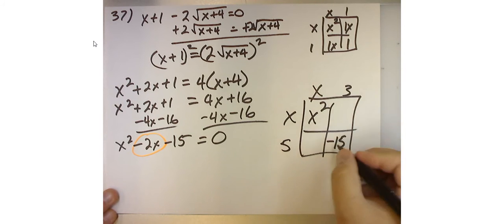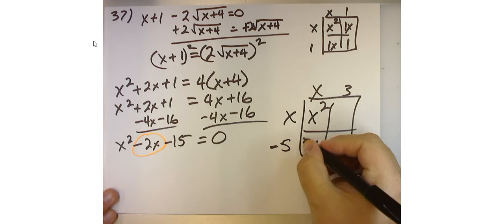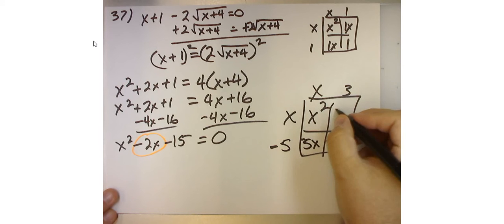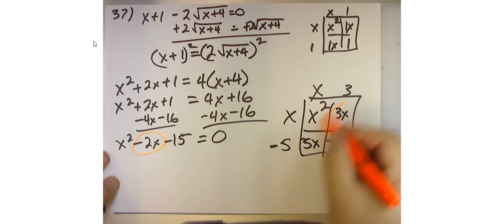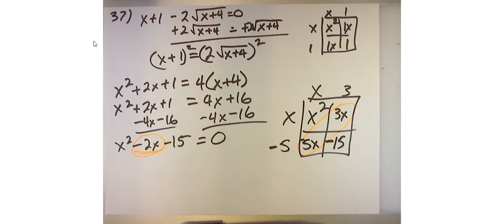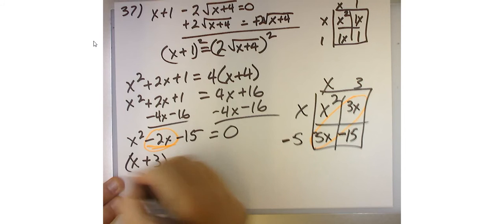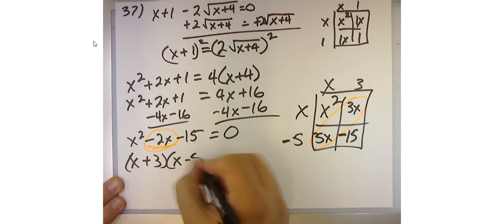So 5 and 3 would work. And because this is -15, one of these has to be negative. It would be 5. The reason for that is because that will give me -5x and +3x. And when I combine these two like terms, I'm going to get my -2x. So this factors into (x+3)(x-5) = 0.